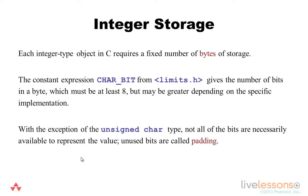Each integer type in C requires a fixed number of bytes of storage to represent it. The constant expression char_bit, which is defined in the standard limits.h header, gives the number of bits in a byte, which has to be at least 8 but can be larger depending on the specific implementation. An implementation, of course, refers to a compiler and associated libraries.